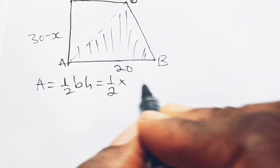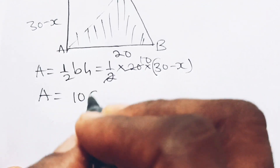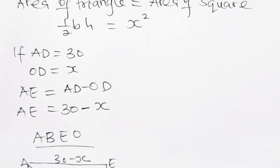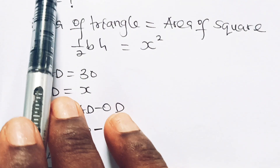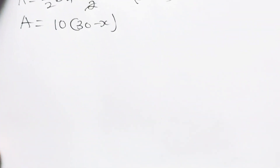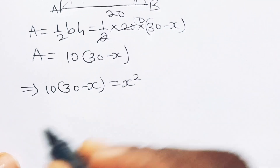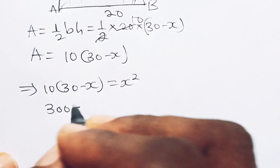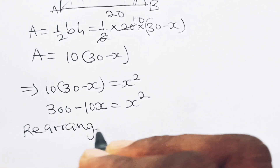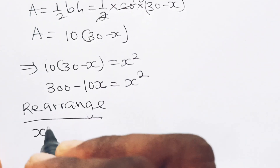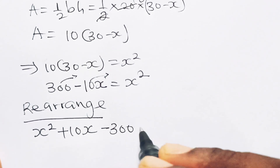So we have area equals half times 20 times (30 minus x). Dividing by 2 gives 10, so area equals 10(30 minus x). Back to the question: half base times height equals x squared. So we write 10(30 minus x) equals x squared. Expanding: 10 times 30 is 300, and 10 times x is 10x, so 300 minus 10x equals x squared. Rearranging gives x squared plus 10x minus 300 equals 0.